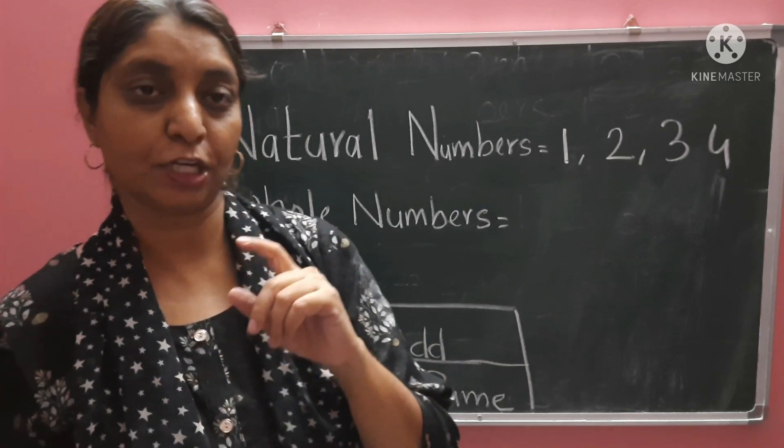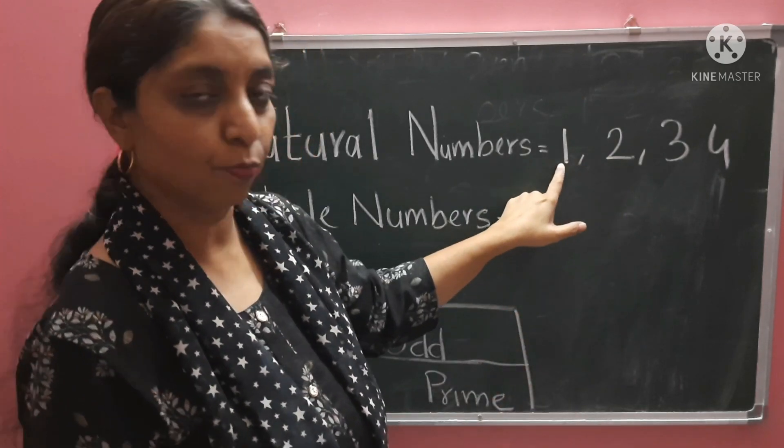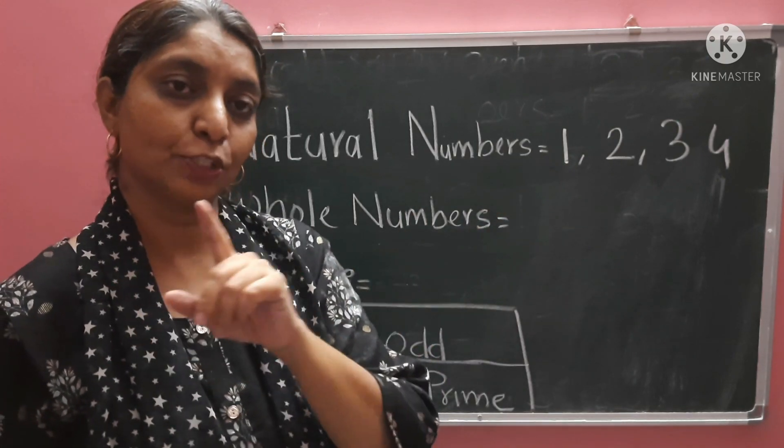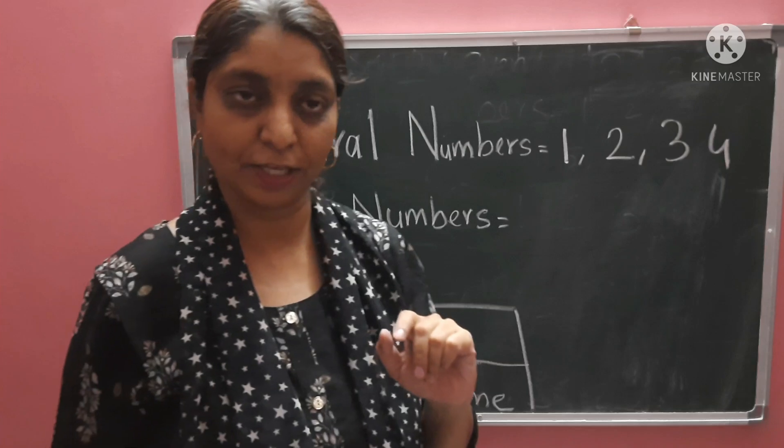So, all the numbers which are used for counting, which begin with one, are called natural numbers. So, all the coconut trees that she counted starting from one, were natural numbers.